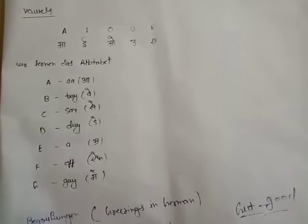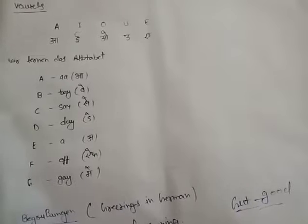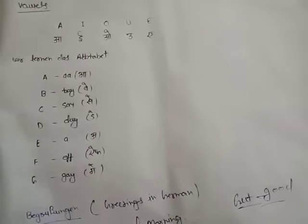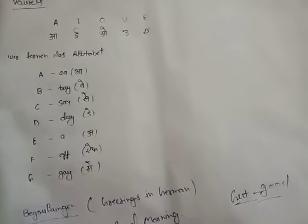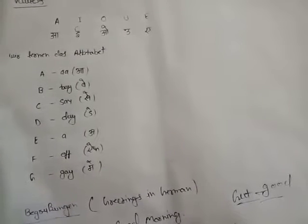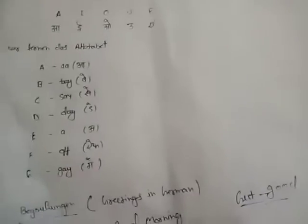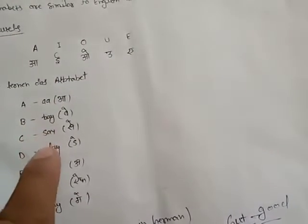After the vowels, here we are going to start the alphabet. We are learning the alphabet. As you can see here, this is the German alphabet, and there is the name of the letter.